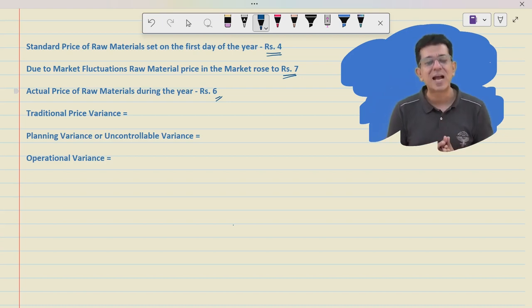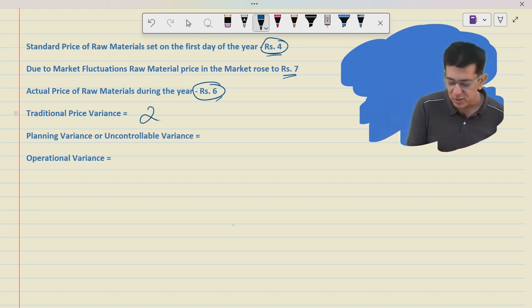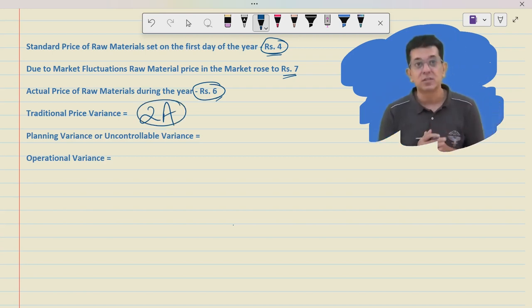Now if I was in CA inter and if I was trying to be thinking about what will be the material price variance, then we have learned this. Standards are set on the first day, the standard was rupees 4. But on the last day the actual was revealed to us, that was rupees 6. So therefore your material price variance will be 2 adverse.